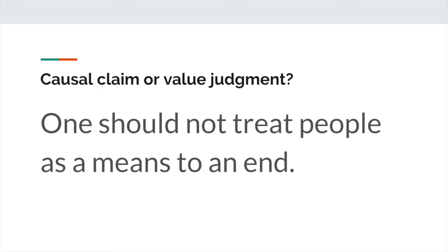Let's take a look at one more example. One should not treat people as a means to an end. Causal claim or value judgment? Hopefully, you can notice that this is a value judgment. There are no cause and effect relationships here. A great word that really cues you to that is 'should.' Any statement that has 'should' in it is almost always making a judgment on some sort of value. If I say 'you should do your homework,' that is making a value judgment that doing your homework is good. That's very different from a causal claim, like 'doing homework allows a student to succeed' — that is a cause and effect relationship. 'Should' statements are about value judgments, and saying that one should not treat people as a means to an end is asserting that treating people as a means to an end is wrong.